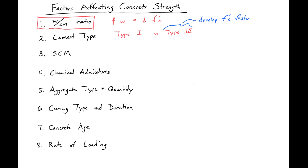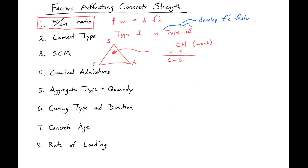Supplementary cementitious materials will also affect the strength. When we add silica fume, fly ash, or slag, it affects our strength in a way that is dependent on the composition of the SCM. We use a triangle to show whether an SCM has more silica, more calcium oxide, or more aluminum oxide. Some of our CH, which we remember as weak, will combine with the silica from our SCM to give us CSH, which we remember as our strong bonding agent in our concrete.